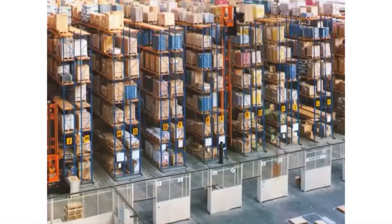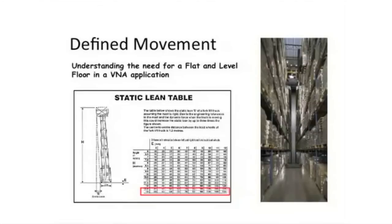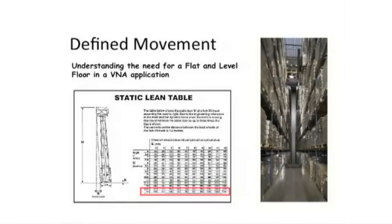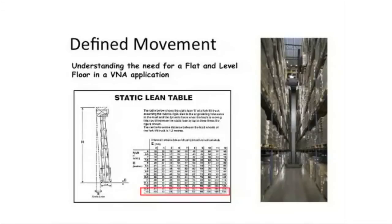So now you come along with your straightedge and figure you've got something of a problem. This brings up the static lean table — simple mathematics. If the truck is standing with its left wheel three millimeters higher than its right wheel over a baseline of 1,500 millimeters, then at 13 meters above floor level the cant is of the order of 35 millimeters. So of the 100 millimeters you had available, you've just taken 35 away. And there's a reason they call it the static lean table — the truck is standing still. When it rolls, you get dynamic sway of up to three times the static value. So the 100 millimeters you had has rapidly become 105 millimeters of space used when you only have 100 available. This gives you the idea that you really should find a way other than the straightedge to measure that floor.